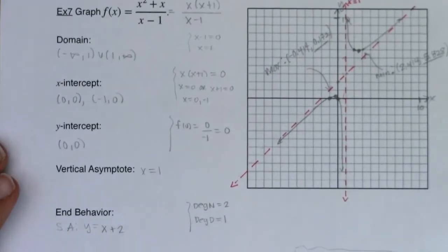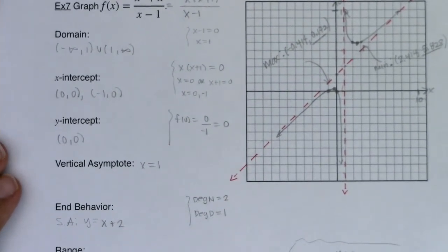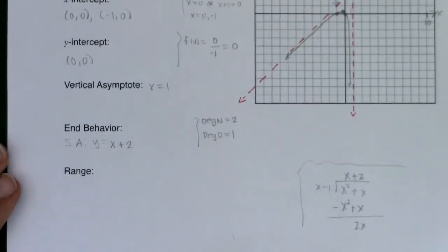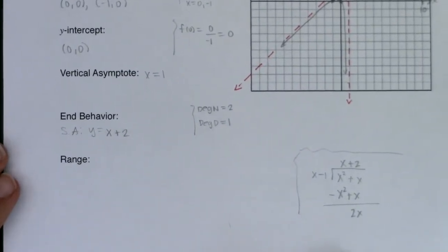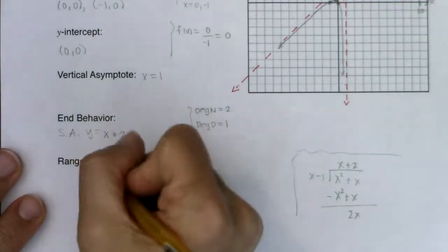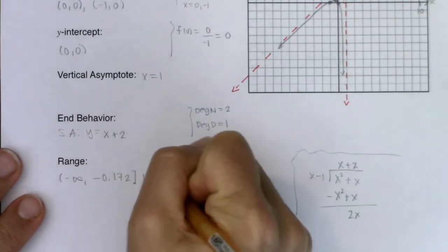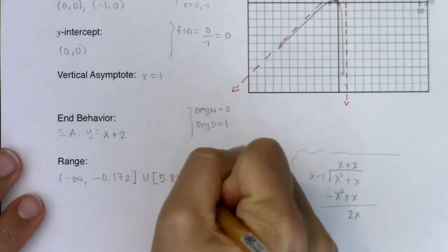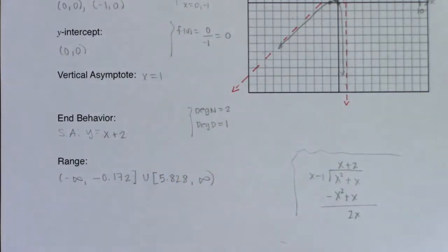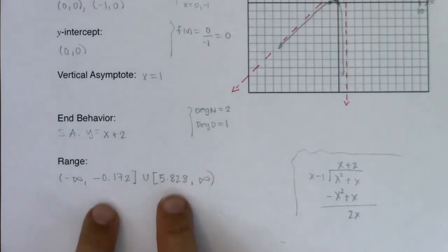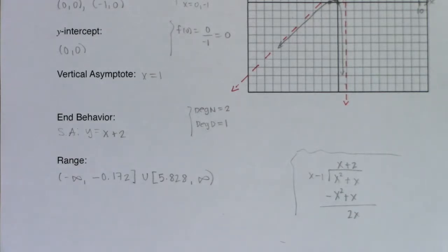So my range for this function is going to be negative infinity to 0.172 and then 5.828 to infinity. And again I want to stress that because I actually hit those y values I'm using brackets this time, not parentheses. All right with all of that we're going to flip to the next example and we're finally going to get to the holes. So I will see you in a bit gang, bye.